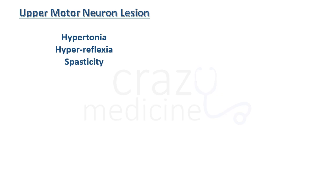First, upper motor neuron lesion — that is, supranuclear lesion. In UMN lesions, there will be hypertonia, hyperreflexia, and spasticity. This happens because, as discussed, UMN controls LMN. So if there is damage to UMN, there will be loss of control over lower motor neurons, which will react to local stretch reflexes, causing increased tone, increased reflexes, and spasticity. There will also be atrophy — here it is disuse atrophy, because the muscle is no longer active as usual, and slowly becomes weaker and atrophied.